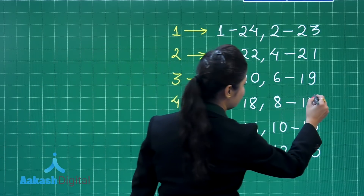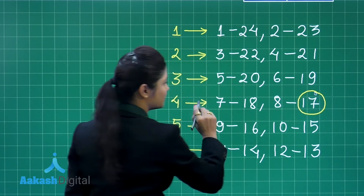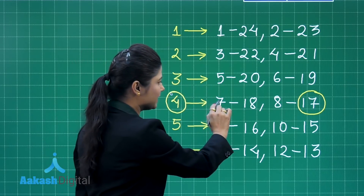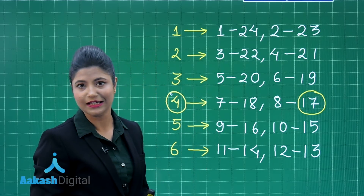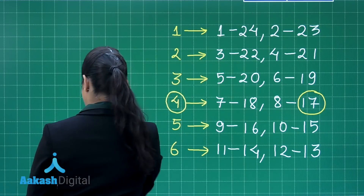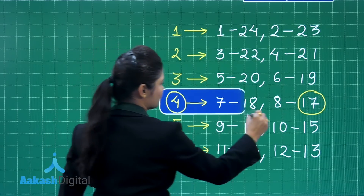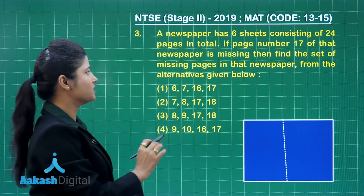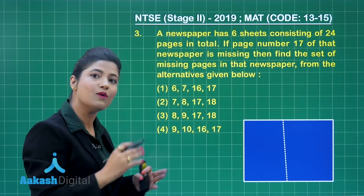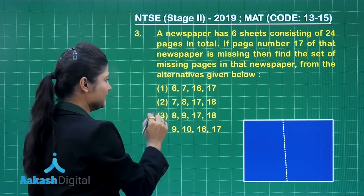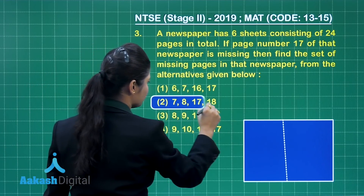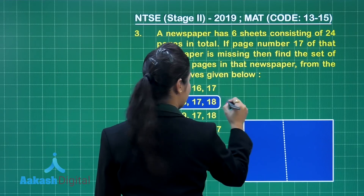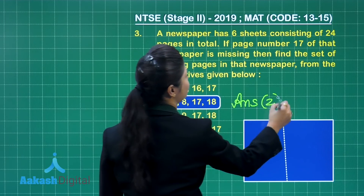Since page number 17 is missing, sheet number 4 is missing entirely. That means pages 7, 18, 8, and 17 are all missing. Coming back to the question, out of these four options, the missing pages along with page 17 are clearly found in option number 2: pages 7, 8, 17, and 18. So the correct answer for this question is option number 2.